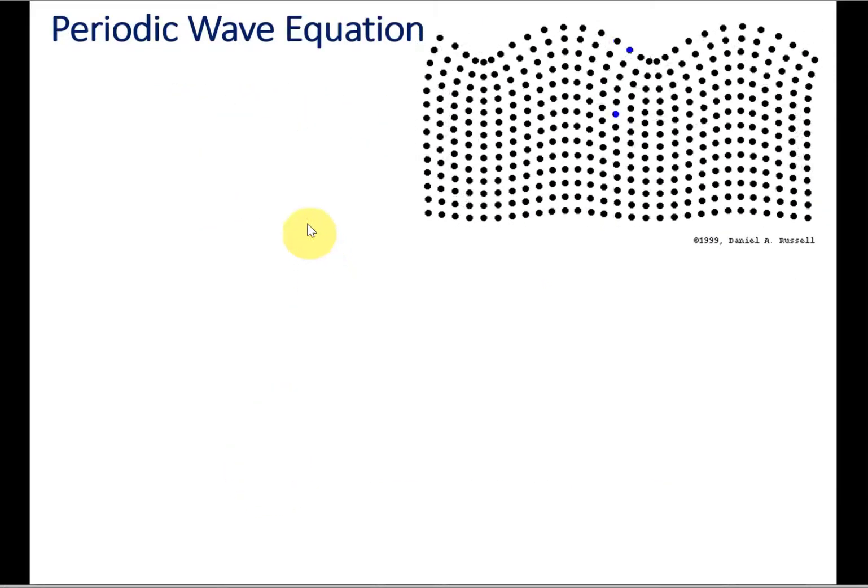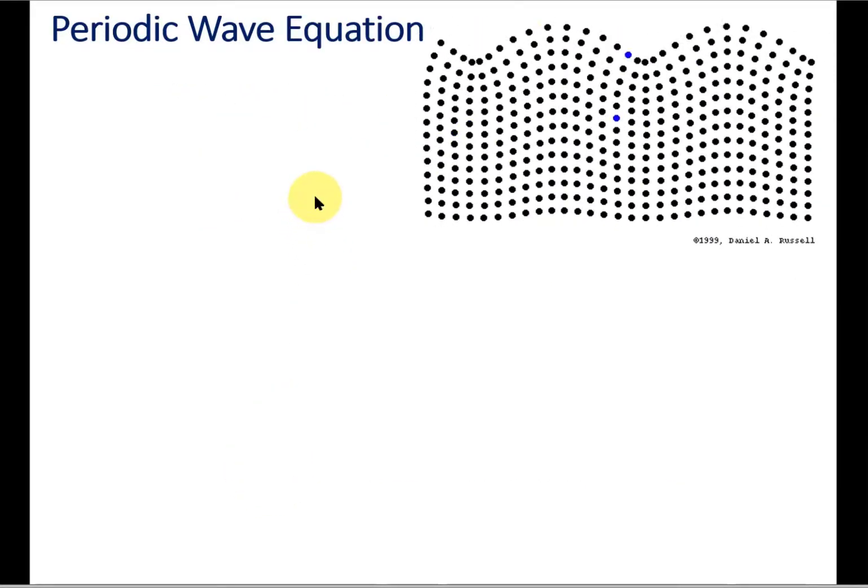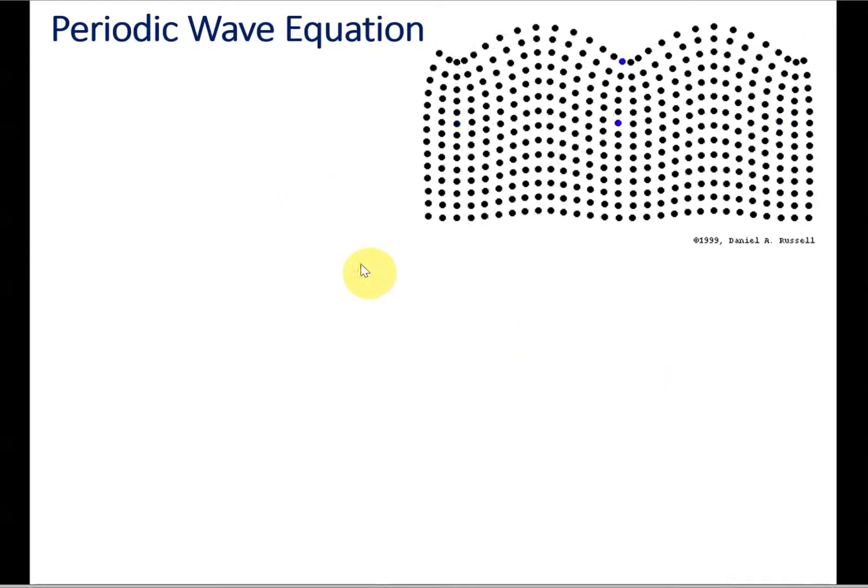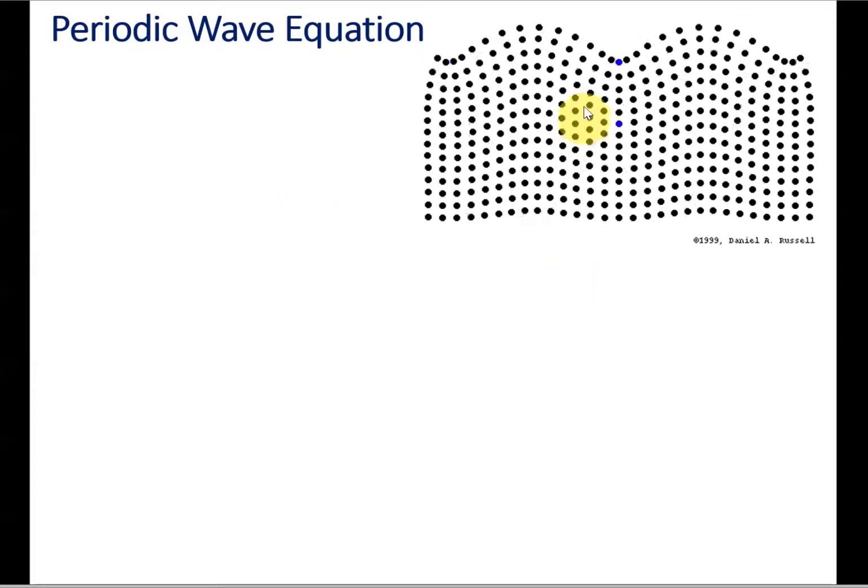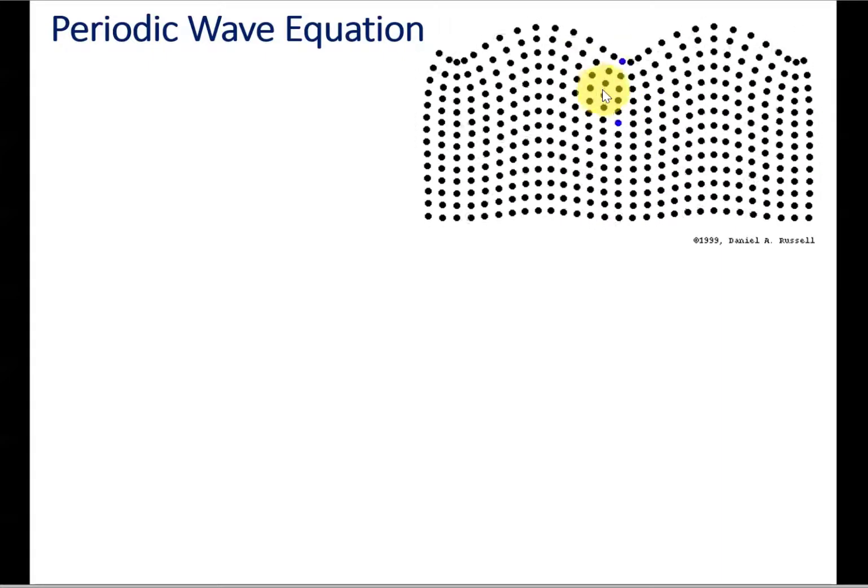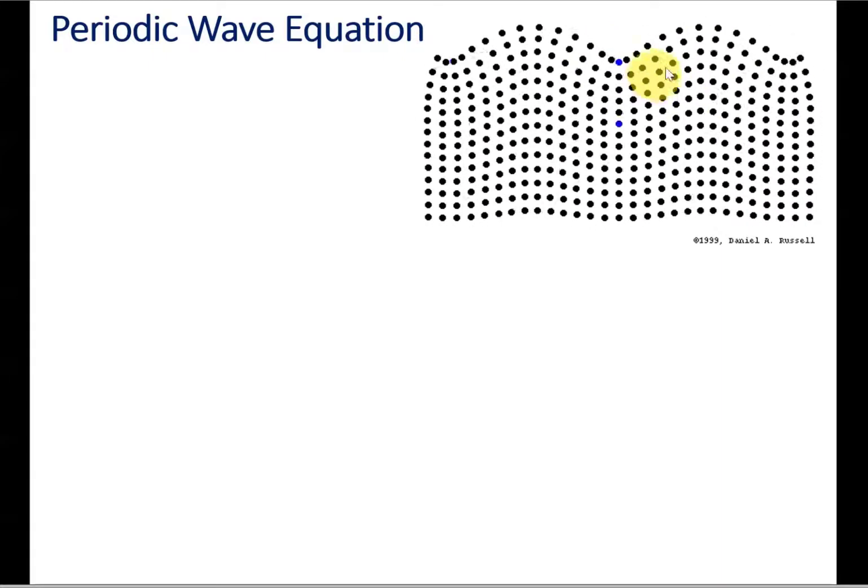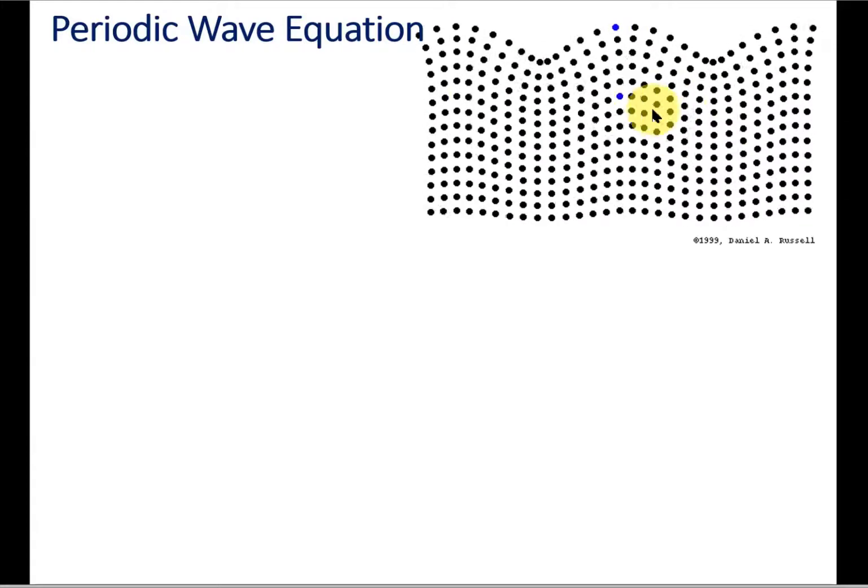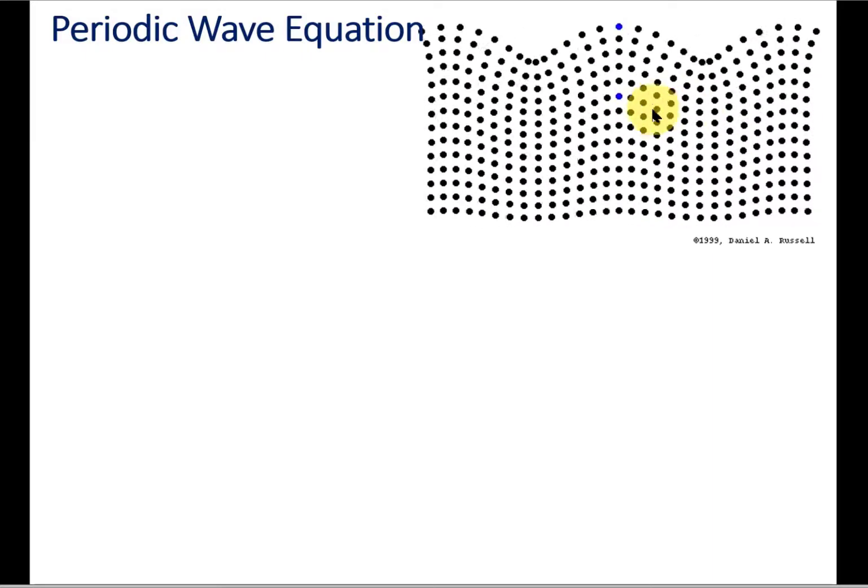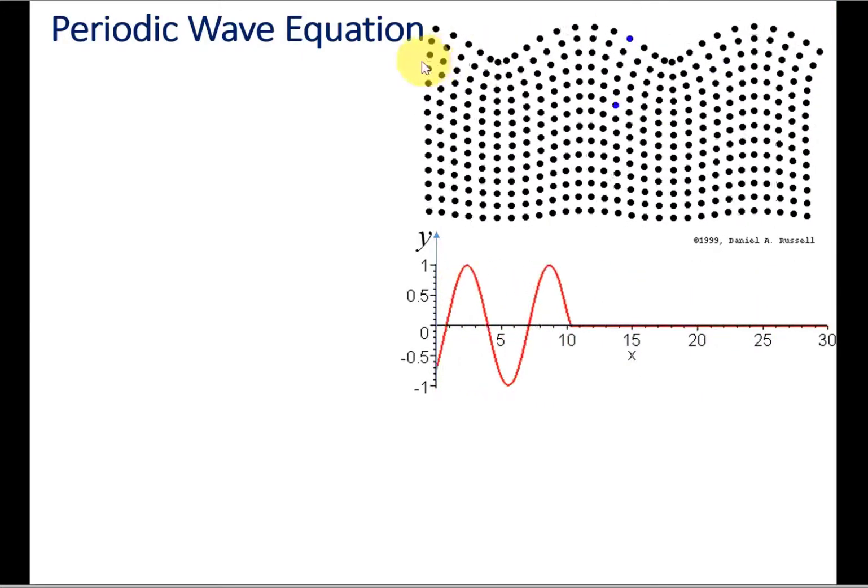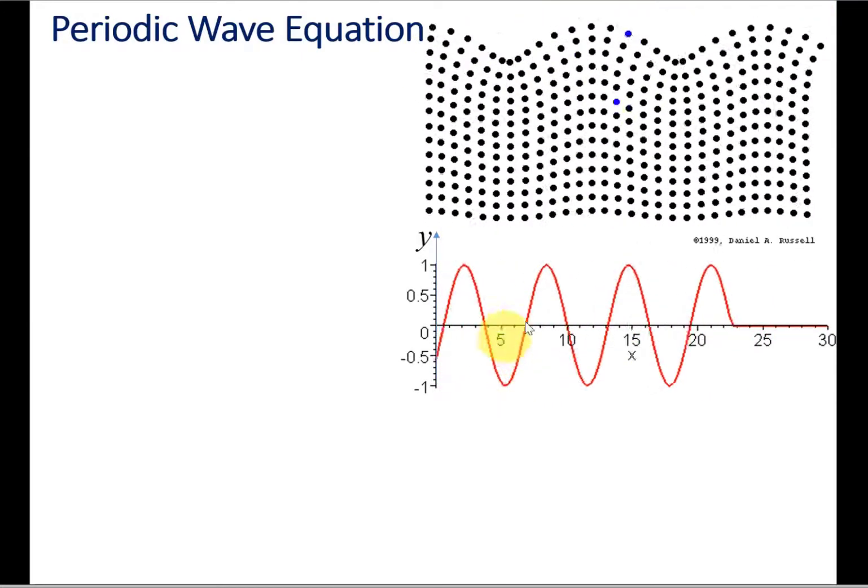Now we want to write a wave equation. This animation shows the vibration of particles as a periodic wave passes through them. Notice how the blue dot at the top is oscillating about the mean position. It is not translating from one point to another point.